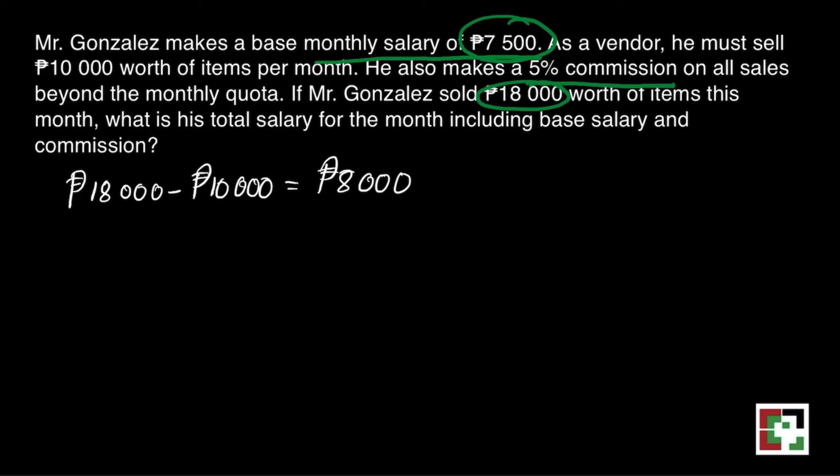So we'll just subtract 10,000, then we have 8,000. It means he gets a commission of 5% beyond 10,000. So let's substitute: that's N over 8,000 is equal to 5 over 100.